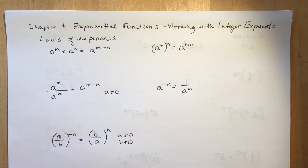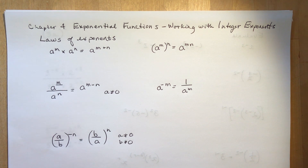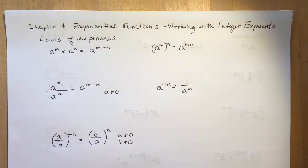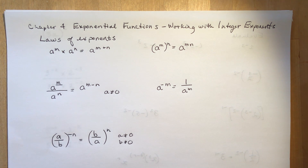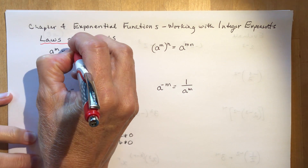Chapter four is working with exponential functions, and the first thing we're going to do is work with integer exponents. Integer numbers are numbers like minus three, minus two, minus one, zero, one, two, three — whole numbers that are either positive or negative, no fractions. That's the next lesson. So first we're going to go over the basic laws of exponents.